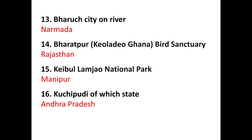The next question is about Bharuch city on a river. Cities and rivers can be asked as questions. Bharuch city is in Gujarat and is located on the River Narmada. Remember: Bharuch is on River Narmada, which is a west-flowing river. Two important west-flowing rivers are Narmada and Tapti, both draining into the Arabian Sea. Other rivers like Ganga, Godavari, Krishna, and Kaveri drain into the Bay of Bengal.